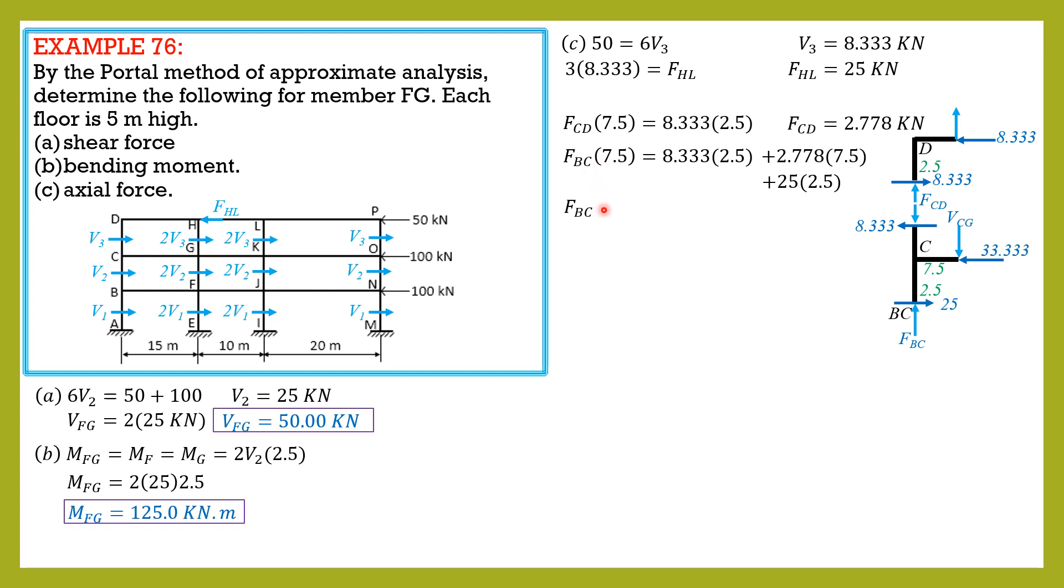So FBC is equal to 13.889 kilonewtons. We'll then draw the FBD of this portion. So this is FBC, 13.889. The unknown here is the axial force of FG. Let's assume it is compression. And these are the shear forces, and this is FHL which we solved earlier here.